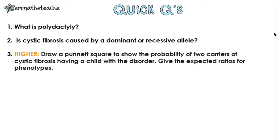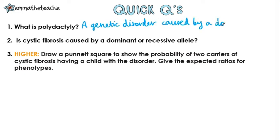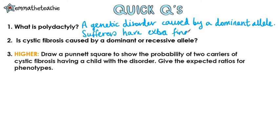Question 1: What is polydactyly? This is a genetic disorder caused by a dominant allele. Sufferers of this disorder will have extra fingers or toes. Question 2: Is cystic fibrosis caused by a dominant or recessive allele? It's recessive. Question 3 (higher tier only): Draw a Punnett square to show the probability of two carriers of cystic fibrosis having a child with the disorder, and give the expected ratios for phenotypes.